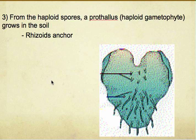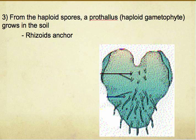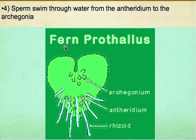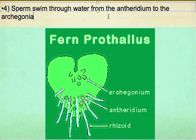From the haploid spores, a haploid gametophyte grows in the soil, which is called a rhizoid anchor. The next step is very interesting: the sperm swim through water in the antheridium to the archegonium.